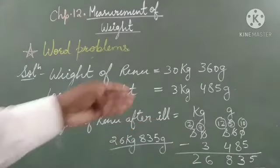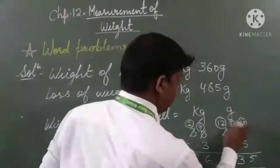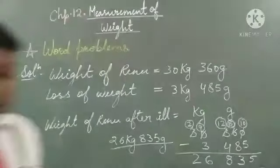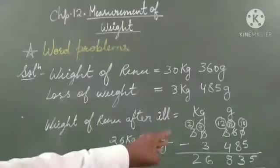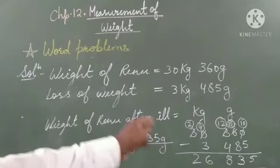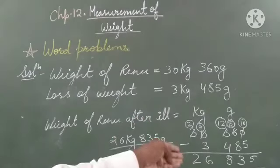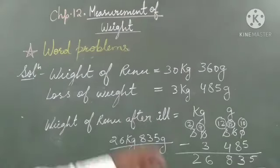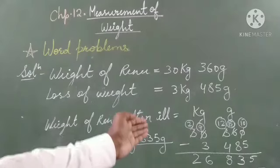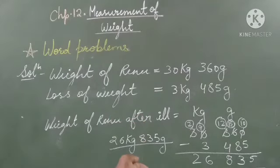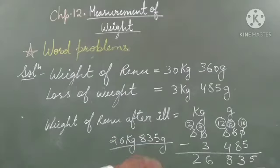We will write left to right for subtraction. We carry, so 3 becomes 2. We borrow, so 0 becomes 10, then 9. So 12 minus 4 is 8, then 9 minus 3 is 6. After giving that number, 3 becomes 2, so 2 will be your answer because below the 2 there is no number. So the answer is 26 kg 835 grams.